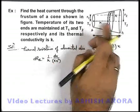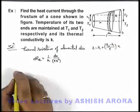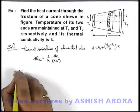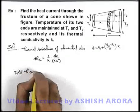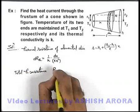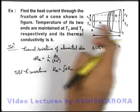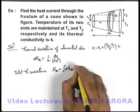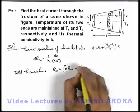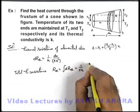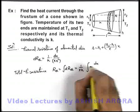As all these elements are in series, we can write the total thermal resistance as R_thermal, which can be written as the integration of dR_thermal. So it will be 1/(πk) times the integration of dx/r².